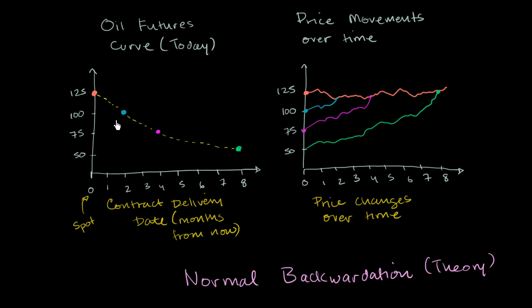What I've drawn right here is an inverted oil futures curve. So if the futures curve looks like this, it just means that it's more expensive to buy oil today than to agree to buy oil at some future date, two months from now, four months from now, or eight months from now.